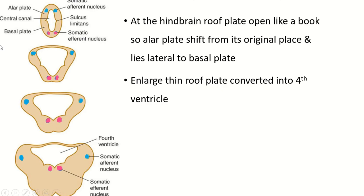In the alar plate and medulla oblongata, the alar plate is dorsally located. The roof plate begins to enlarge and opens like a book, and the roof plate is converted into a thin membrane-like structure, forming the fourth ventricle in front. The alar plate shifts laterally, so the basal plate is situated medially and the alar plate is situated laterally in the medulla oblongata.